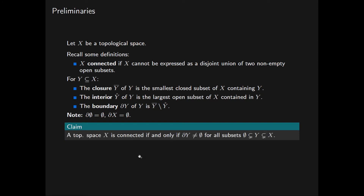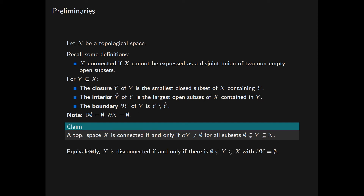We now state the claim that we wish to prove: a topological space X is connected if and only if the boundary of Y is non-empty for all subsets Y of X that are not equal to the empty set or X itself. Equivalently, X is disconnected if and only if there is some subset Y of X not equal to the empty set or X itself such that the boundary of Y is empty.